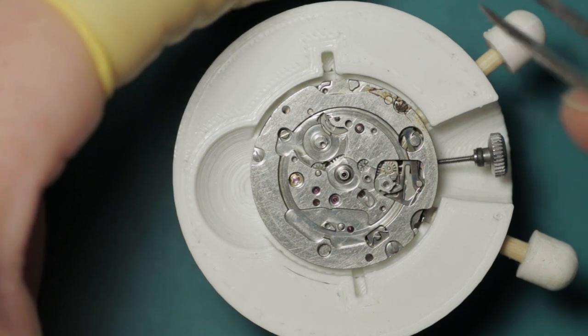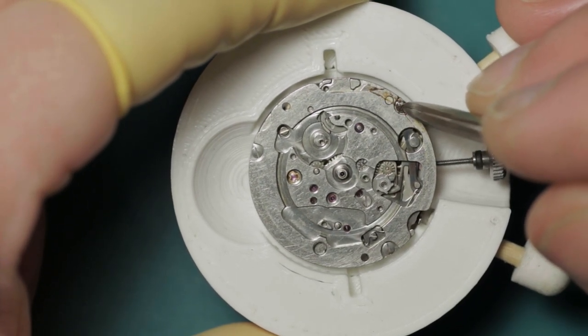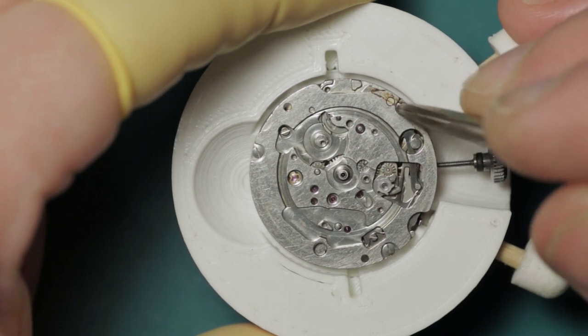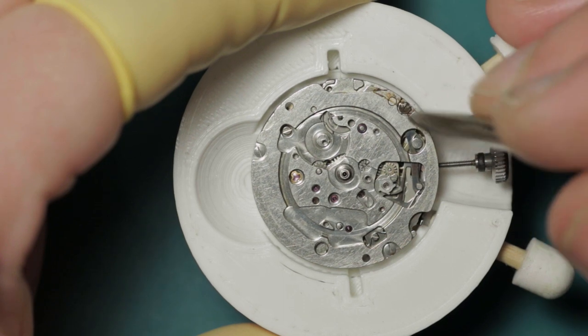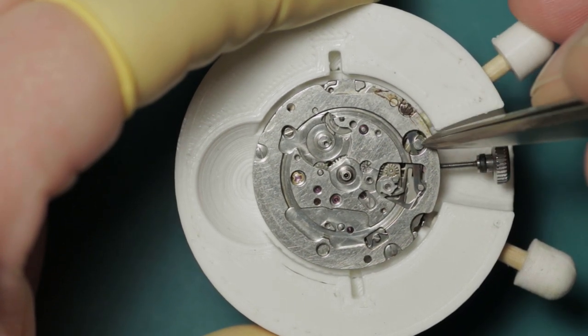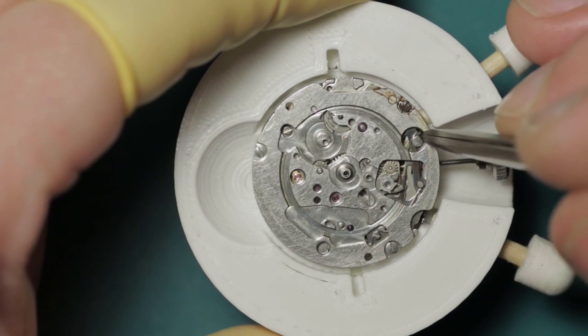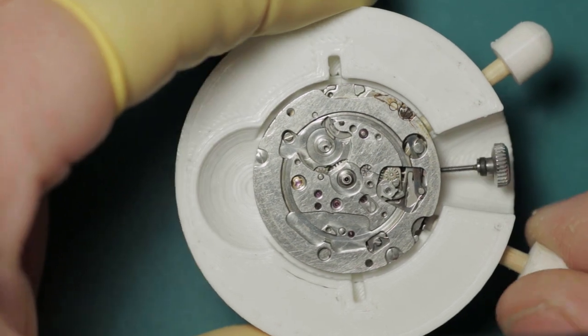As you can see up here, you've got some signs of corrosion. There's been some moisture ingress in here in the past through the left hand pusher by the look of it, because it's all centered around here. It's clearly gotten under here and caused some problems. It's somehow causing the hammer, the reset hammer, to stick.